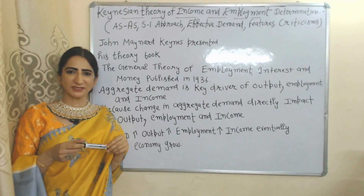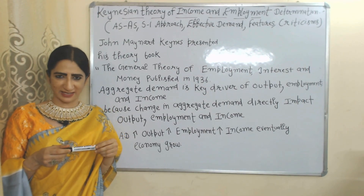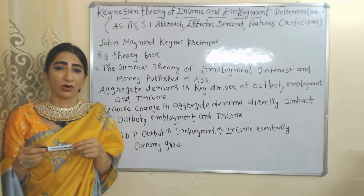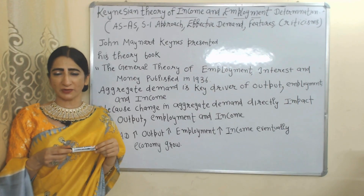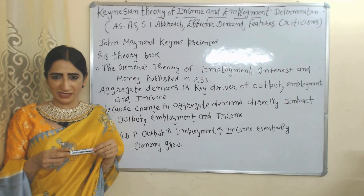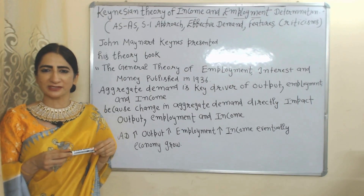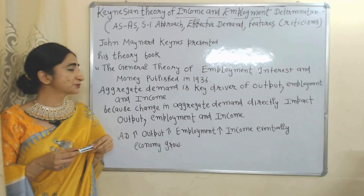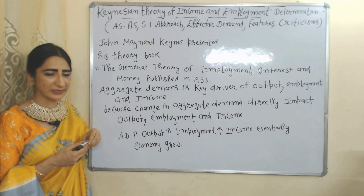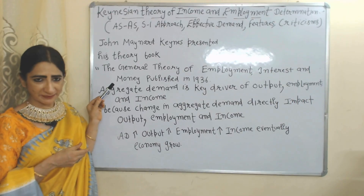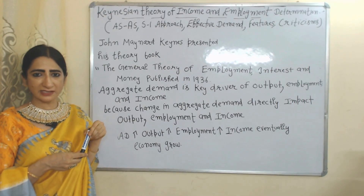Hello everyone, my name is Vinny Sethi. I hope you all are staying healthy. Today we are going to talk about Keynesian Theory of Income and Employment Determination. John Maynard Keynes presented this theory in his book named The General Theory of Employment, Interest and Money. This book was published in 1936.